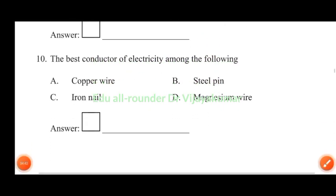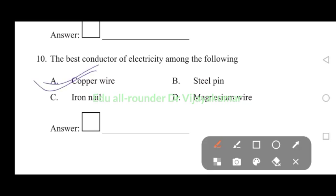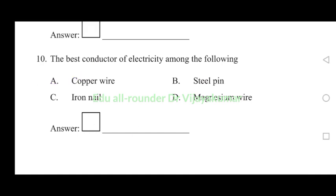The best conductor of electricity among the following: copper wire, steel pin, iron nail, magnesium wire. The best conductor is copper wire. That is why copper wire is used. Answer A, copper wire.